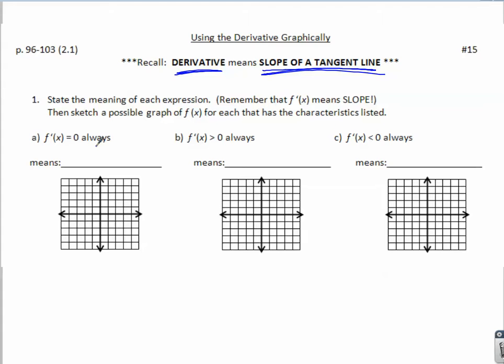f'(x) = 0 always. Slope equals zero always. That's what it means. Slope is zero. What does that have to look like? Any sort of horizontal function, flat.